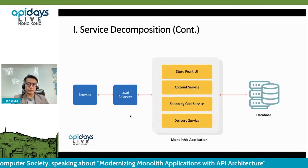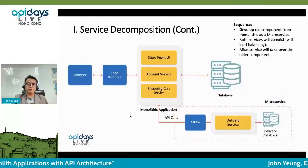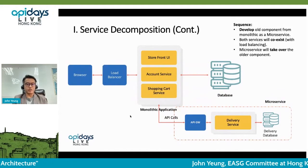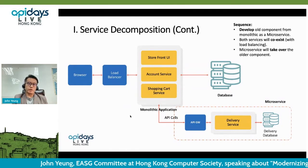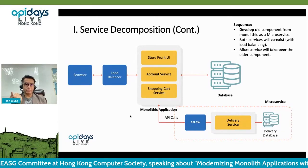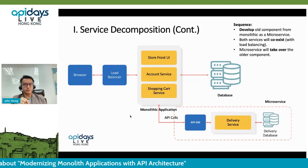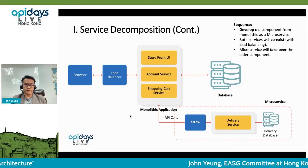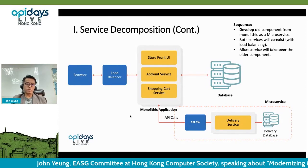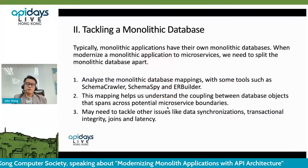Taking the previous diagram as an example — this is a monolithic application. We select one of the components, which is the delivery service, and develop it into a microservice. The sequence is: first, develop the old component from the monolithic as a microservice, separating the delivery service out. Then we run both components at the same time so they coexist with load balancing. Finally, the microservice will take over all the traffic from the monolithic application.